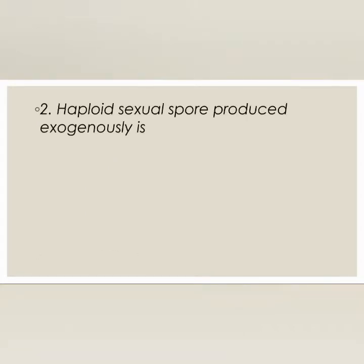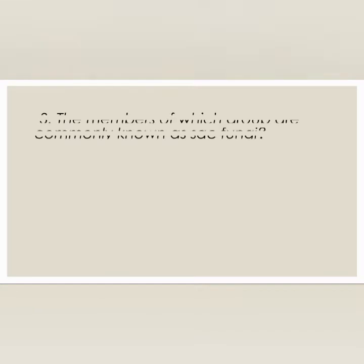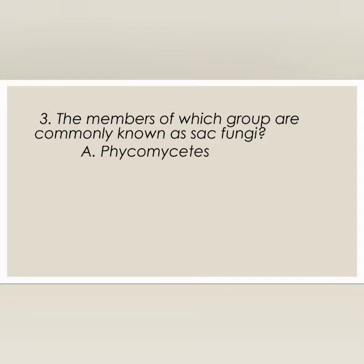Haploid sexual spore produced exogenously is: Ascospore, Basidiospore, Oospore, or Zygospore? The correct option is option B: Basidiospore. Next question: the members of which group are commonly known as sac fungi — Phycomycetes, Zygomycetes, Basidiomycetes, or Ascomycetes?